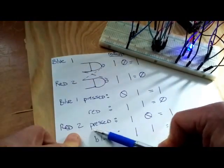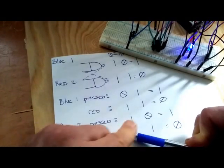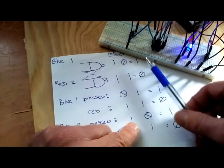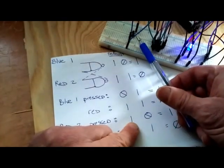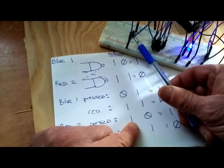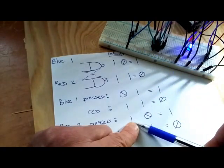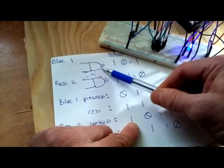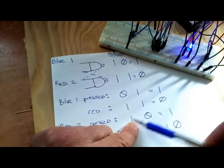What happens when we press the red button? Well, first off, our blue LED gate number one is still a true value because that's not being depressed. So that's going to come down from here as a true value or number one.